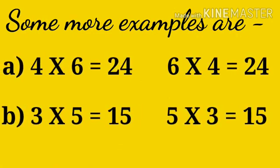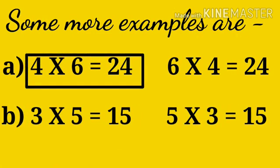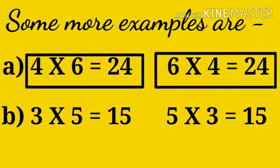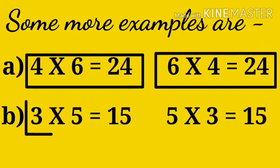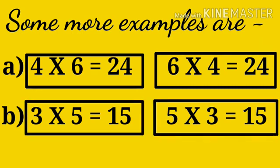Some more examples are: four sixes are twenty-four and six fours are also twenty-four. Next, three fives are fifteen and five threes are also fifteen. So we are changing the order of the factors but we are getting the same answer every time.